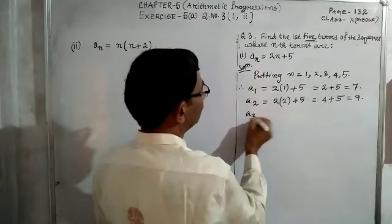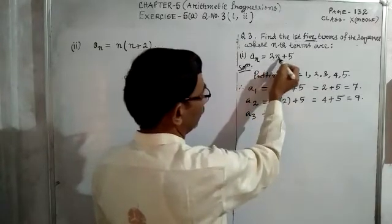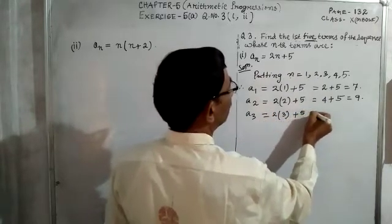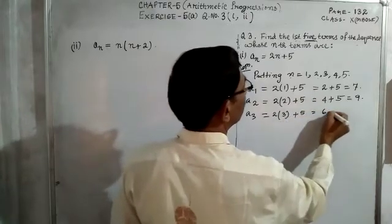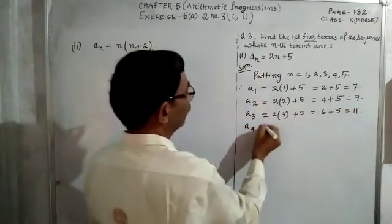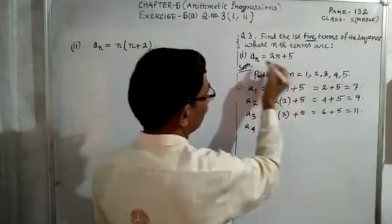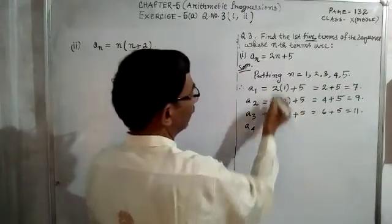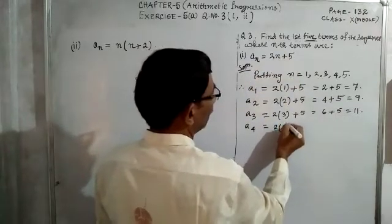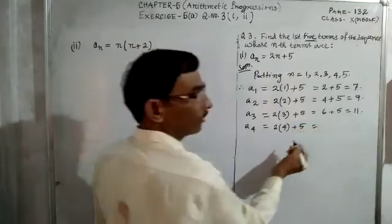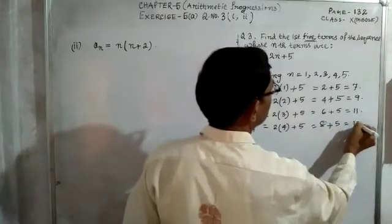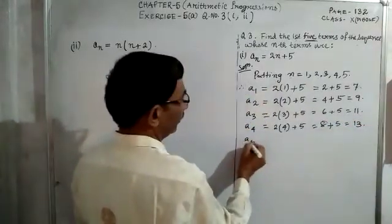Next, when n is equal to 3, a₃ = 2(3) + 5. 2 into 3 is 6, plus 5 is equal to 11. And when n is equal to 4, aₙ changes to a₄ = 2(4) + 5. 2 into 4 is 8, plus 5 is equal to 13.